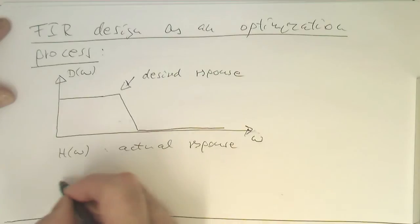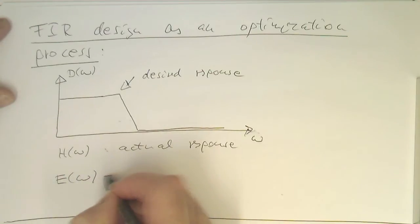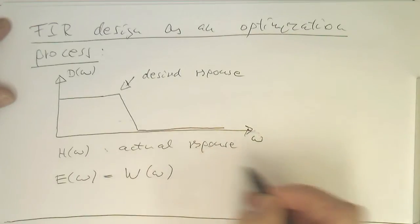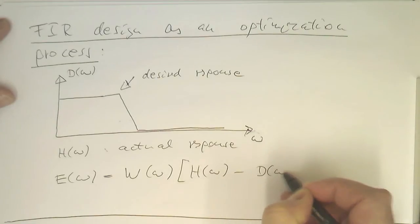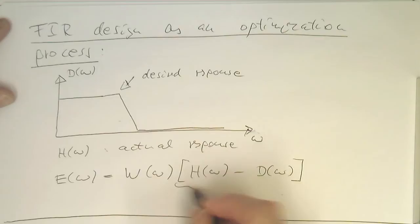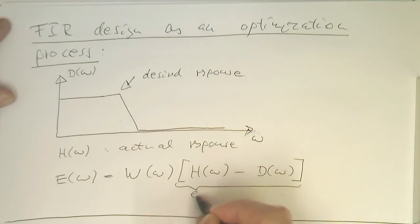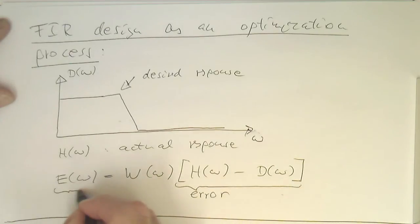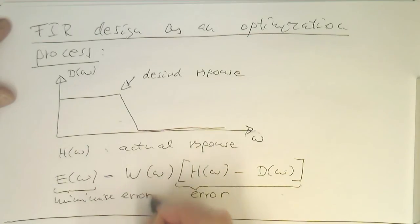We define an error function, E of omega, done like this here. We've got our h of omega, that's our actual response, and that's our desired response. So this defines here an error. The only thing we need to do is minimize the error.